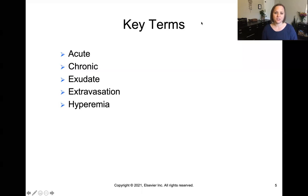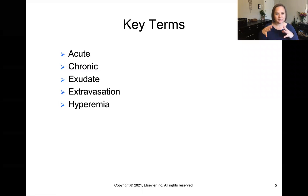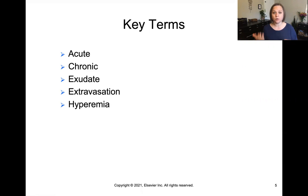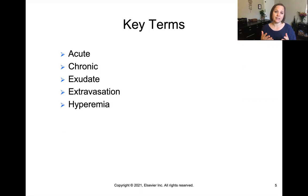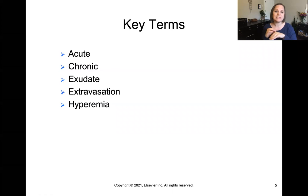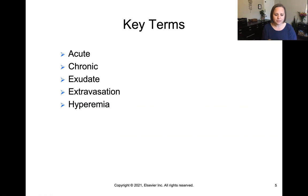Here are some key terms you'll need to know in terms of inflammation. Acute means something that happened suddenly and right now. Chronic means it happened over a long time. You can have acute inflammation or chronic inflammation. Exudate is the actual fluid that seeps out from the vascular space into the area that is inflamed. Extravasation is when fluid leaks out, like by an IV site — the IV solution leaking out of the vein into the surrounding tissue.